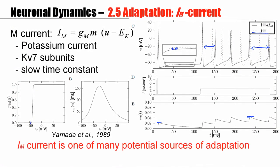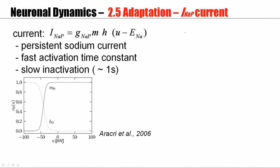A current, such as IM, is one of the potentially many sources of adaptation. It works by lowering the membrane potential, by lowering the spike after potential. Now, you can think of a different way of generating adaptation, and that would be not changing the spike after potential, but by increasing the firing threshold.